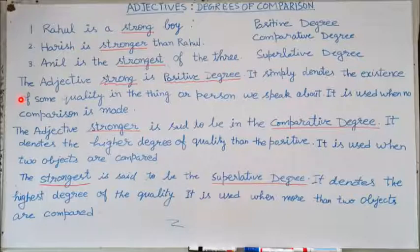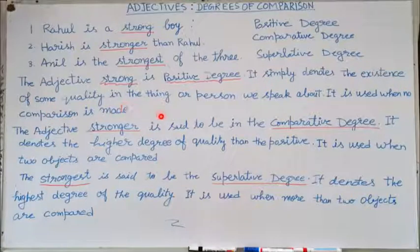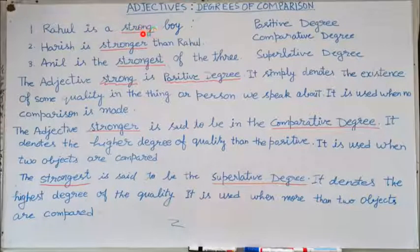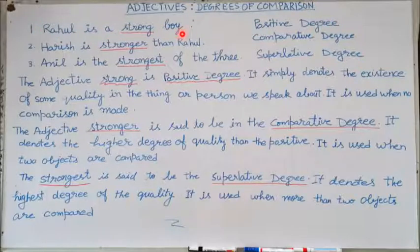The adjective 'strong' is positive degree. It simply denotes the existence of some quality in the thing or person we speak about. It is used when no comparison is made. So in the first sentence, 'strong' is positive degree because there is no comparison.